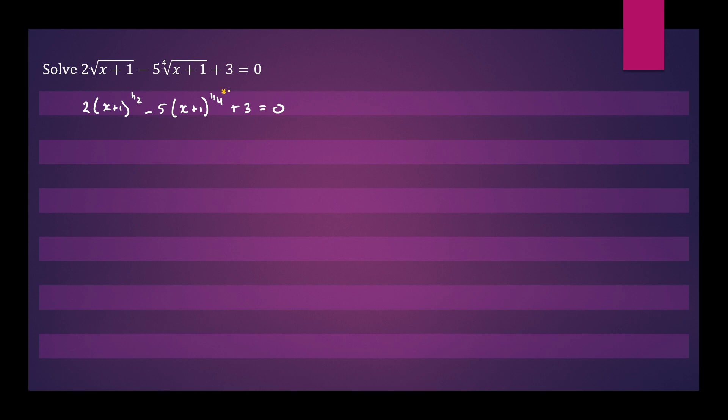Notice that the exponent here is a quarter. Let's try to change this exponent to be a quarter as well. That can be written as 2 times x plus 1 to the quarter power squared minus 5 times x plus 1 to the quarter power again plus 3 equals 0.